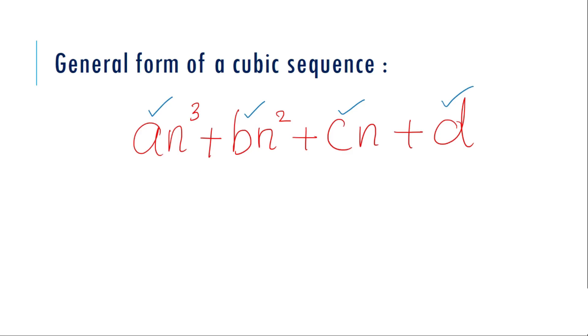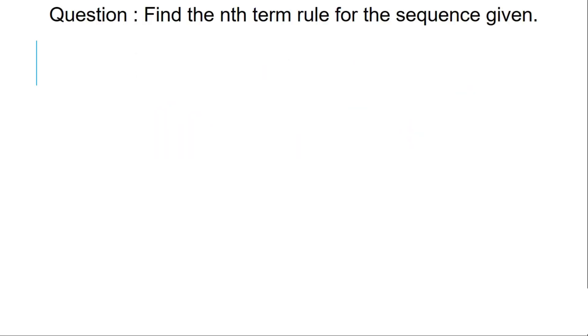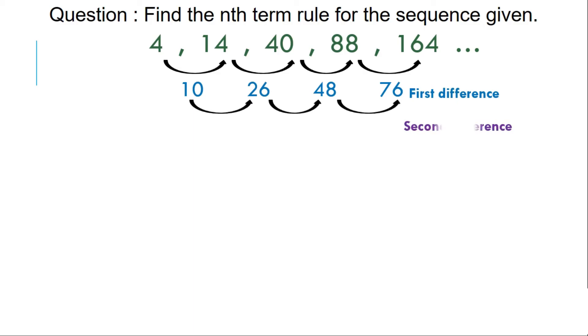So let's start with the first question: Find the nth term rule for the sequence given. Now as we started with this question, we know this is a cubic sequence and the first difference was calculated as 10, 26, 48, and 76. The second difference is 16, 22, and 28. The third difference is 6, which is constant. Now how are we going to find a, b, c, and d?